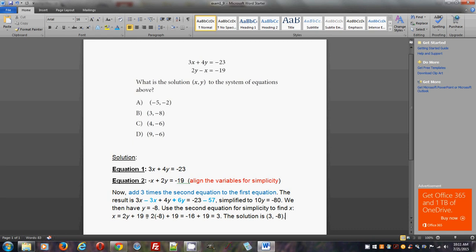So 2y plus 19. And you know y is equal to negative 8. So this will become 2 times negative 8 plus 19. Which would amount to negative 16 plus 19. And that would be over 0. Which would be 3.